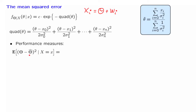If I tell you the value of the observations, then the estimator is completely determined. The estimator is a random variable that processes the data and comes up with an estimate. So although it is a random variable, once I tell you the value of the observations, the value of this random variable has been completely determined. We can therefore replace it with its actual numerical value, theta hat, given by this expression.